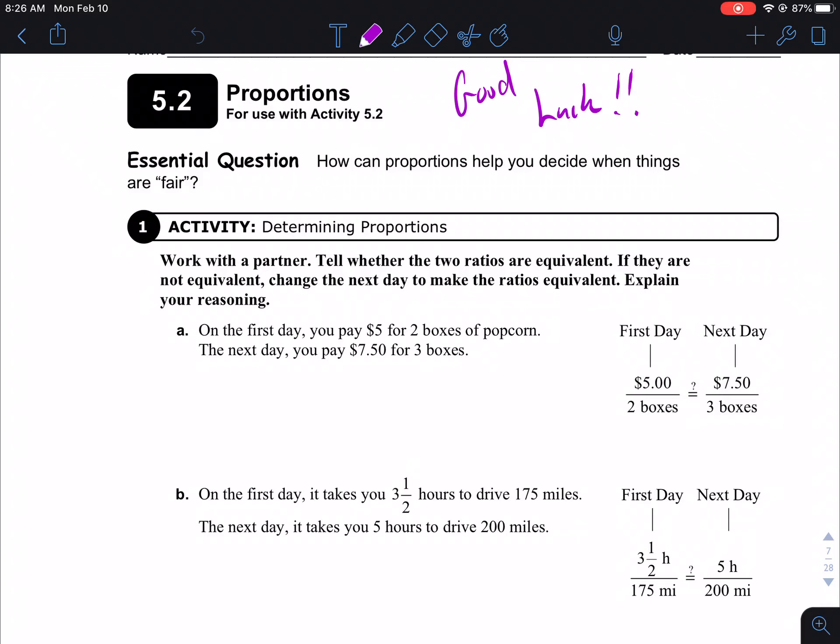Hey, welcome back math class. This is Mr. Jacobs, and I'm looking at 5.2 proportions, a new section. How can proportions help you decide when things are fair? Big idea. I use this all the time when I'm shopping. So, it says tell whether the two ratios are equivalent. If they are not equivalent, change the next day to make the ratios equivalent. Explain your reasoning.